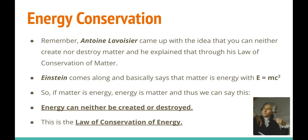But then Einstein comes along. With his own branch of physics — and just so you know, there's a difference between Newtonian physics and Einsteinian physics, though we don't get into that here — Einstein's branch is much more theoretical and calculation-based rather than observed. What Einstein says in his branch is that pretty much energy is matter, which most physicists agree with today.